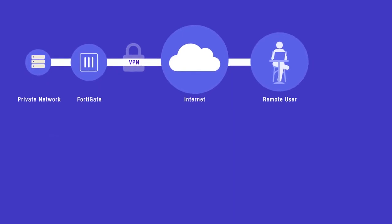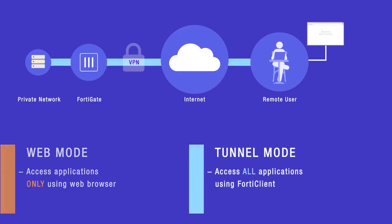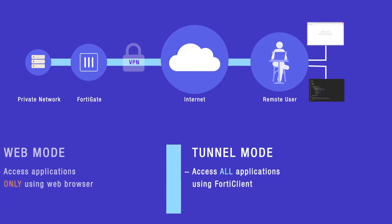We are going to look at two different SSL VPN scenarios. SSL VPN web mode allows remote users to securely access all applications in a web browser. The limitation of the web-based mode is that the remote user can only access browser-based applications. SSL VPN tunnel mode allows remote users to securely access web browser and non-web browser-based applications in a private network.